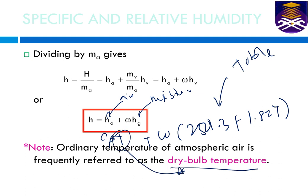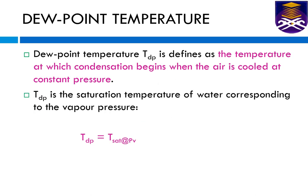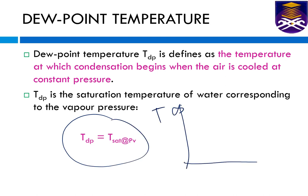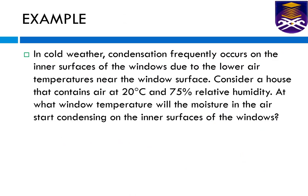The temperature referred to here is the dry bulb temperature, which is the atmospheric temperature. The dew point temperature is the temperature at which the air starts to become saturated on the temperature-entropy diagram. When moisture reaches the saturated vapor line and enters the mixed region, saturated liquid starts to develop — this is what we call the dew point temperature.